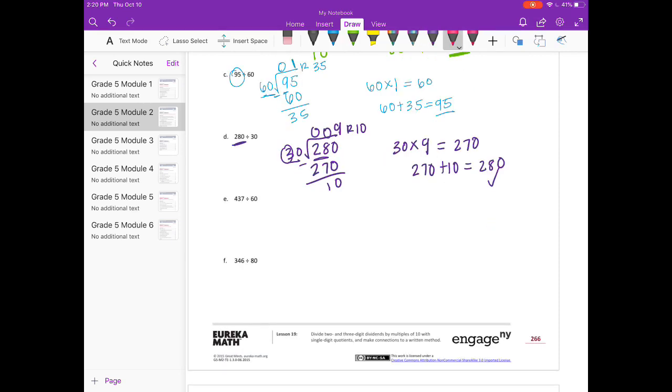437 divided by 60. Let's see. So 60 can't go into 4. It can't go into 43. But 60 times 5 would be 300. We could probably do another one. 60 times 6 would be 360. And 60 times 7 would be 420. So that's as close as we can get. So 60 times 7 is 420. We'll get a remainder of 17.